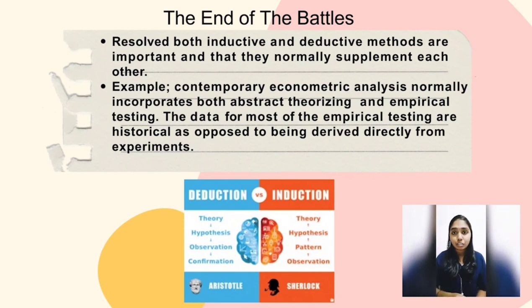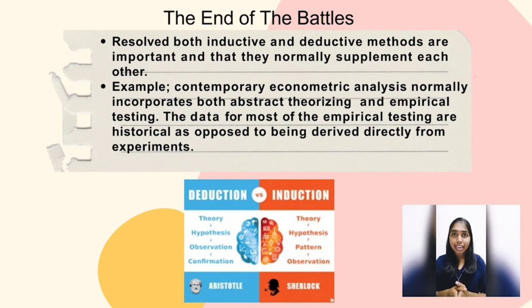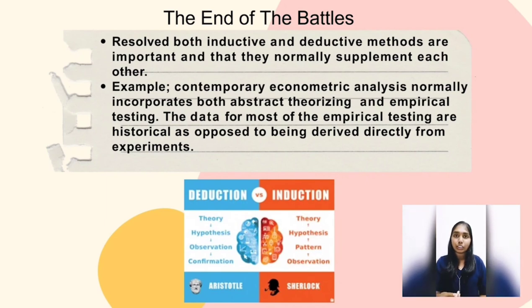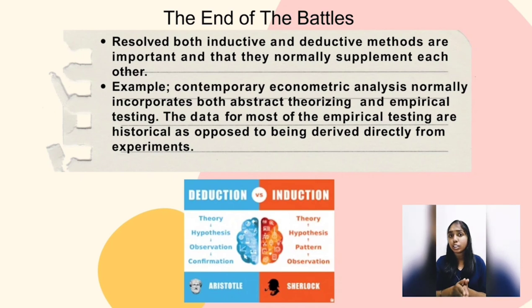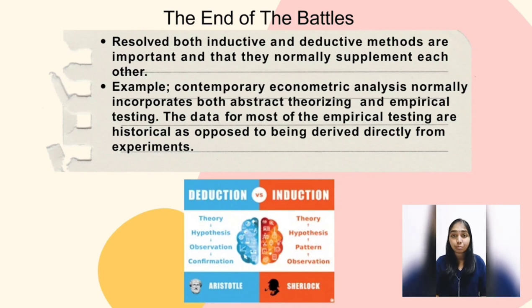In the end, the Methodenstreit seemed to resolve itself into the belief that both inductive and deductive methods are important and that they normally supplement each other. The gathering of information and the establishing of analytical tools with which to handle accumulated information are both instrumental parts of sound economic science. Contemporary econometric analysis normally incorporates both abstract theorizing and empirical testing, and the data for most empirical testing are historical rather than derived directly from experiments.